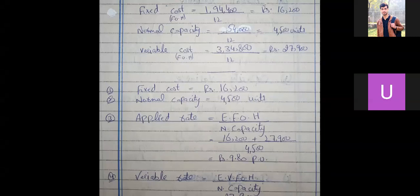After that, normal capacity of 54,000 units divided by 12 gives 4,500 units. Then variable FOH of Rs. 3,34,800 divided by 12 gives Rs. 27,900.